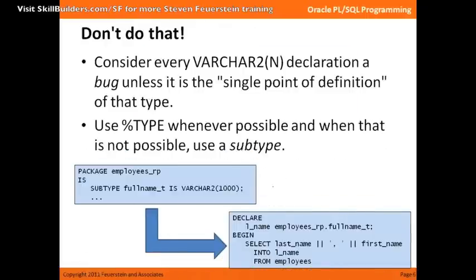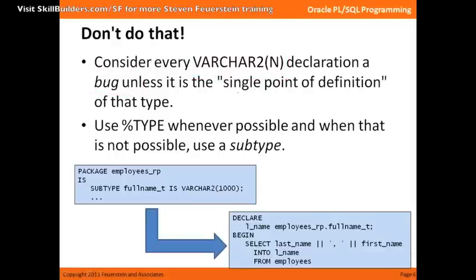My suggestion is that you should consider every single VARCHAR2 declaration to be a bug — unless it is the single point of definition of that type. What I mean by single point of definition is that it's defined somewhere and you reference that definition whenever you declare a new variable. That's what %TYPE is — it's a single point of definition for any variable based on a single column of a table. We should use %TYPE whenever possible. But when we can't, what do we do? We should use SUBTYPE.